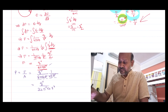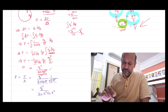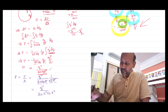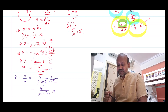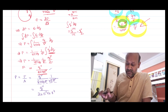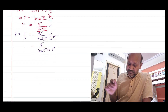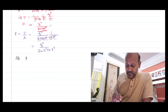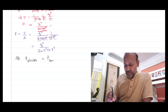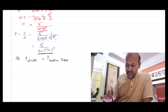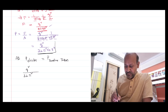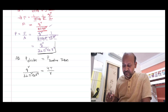Now we know both values. We can equate the two pressures: pressure due to the electric charge equals pressure due to the surface tension. So, Q²/(32π²ε₀R⁴) = 4T/R.